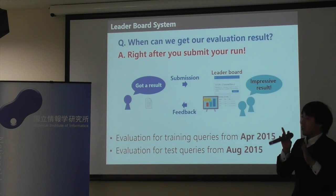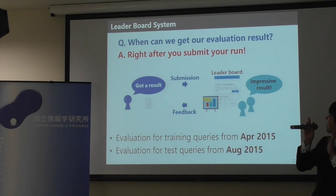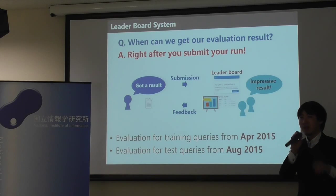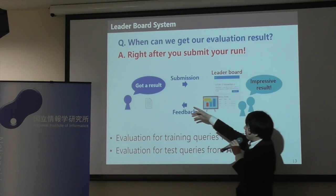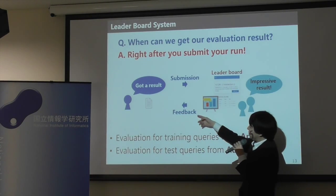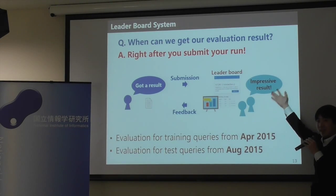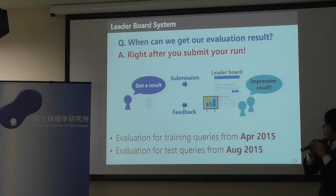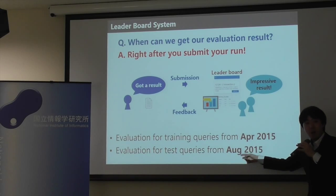As I said, we will provide a leaderboard. Your question might be: when can we get our evaluation results? Our answer is right after you submit your run — you can get your result whenever you want. You can upload your run and then get the result, and other people can also see how good your result is. We will open our system around April for training queries, and around August for test queries.